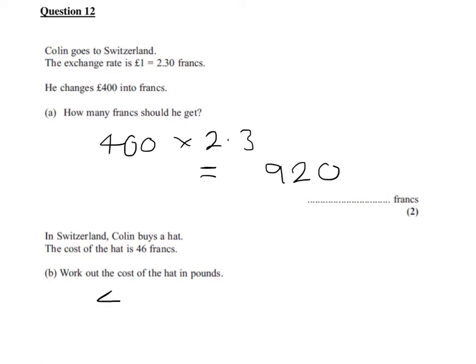Now, if we have francs and we want to convert into pounds, which is what we have to do in the second part of the question, Colin buys a hat. The cost of the hat is 46 francs, so we need to divide by the number of francs that make £1. We divide by 2.3, putting a zero on the end will make no difference, and that gives you an answer of £20.